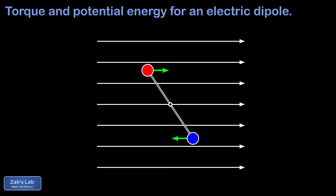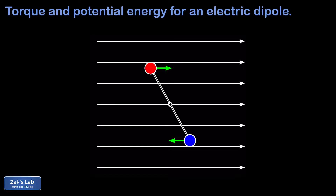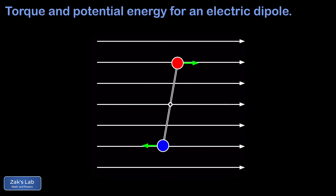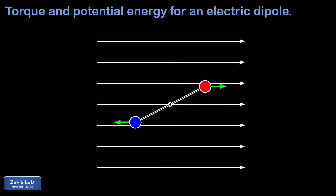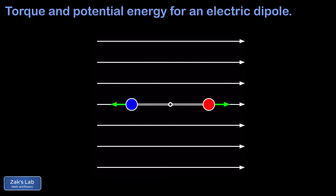So the net force might be zero but the torque is not. As we can see in the animation, these two opposite forces are actually twisting the dipole — they exert a torque on the dipole, and this is always in a direction that attempts to align the dipole moment with the electric field.